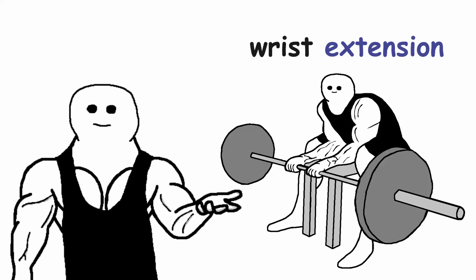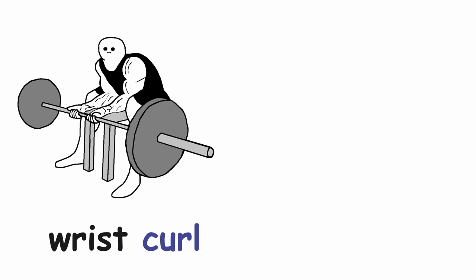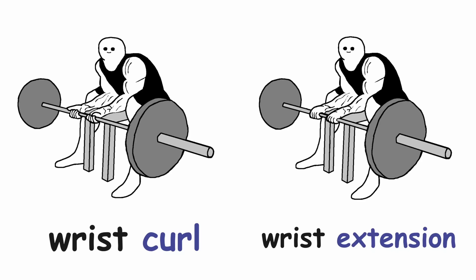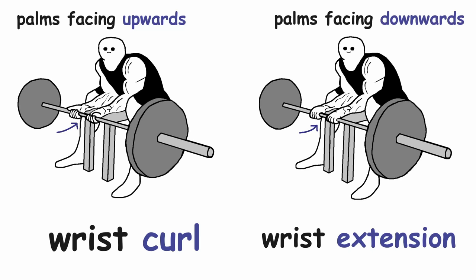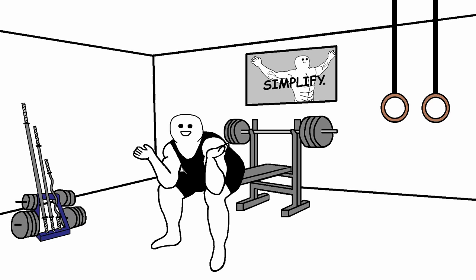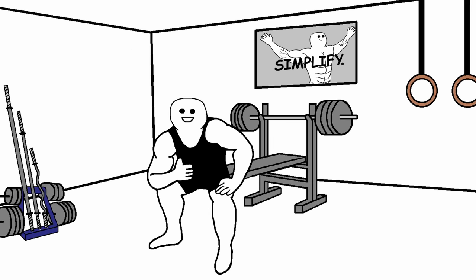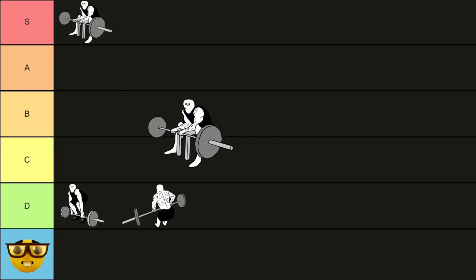The next wrist curl variation is the wrist extension. The difference between a wrist curl and a wrist extension is the position of your palms. When you are doing the wrist curl, your palms are facing upwards, but when you are doing the wrist extension, your palms are facing downwards. I am personally not that big of a fan of the wrist extension, but it can for sure still be used. I will put it in the B tier.